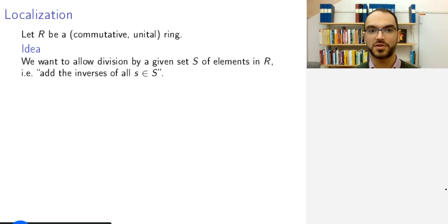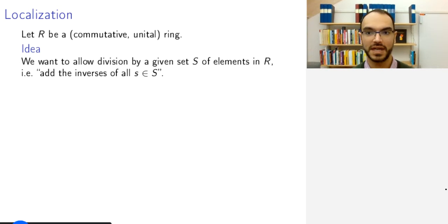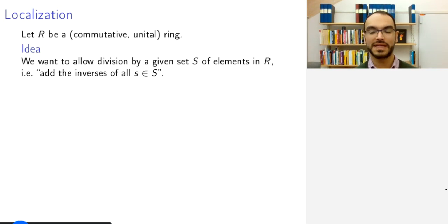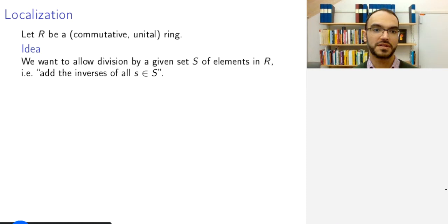Hello and welcome to today's lecture. In this part of the lecture, we will look at localization. Localization is a technique in commutative algebra that is useful both in algebra and in geometry. Its use in geometry is when we want to look locally at points in some variety or some such thing, and that gives it the name localization. But the idea is more general than that.